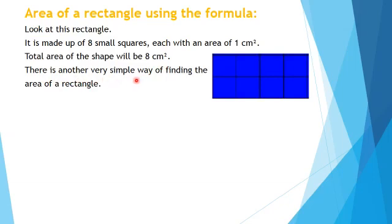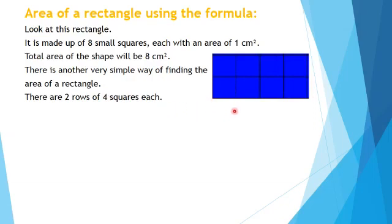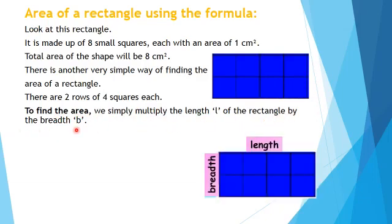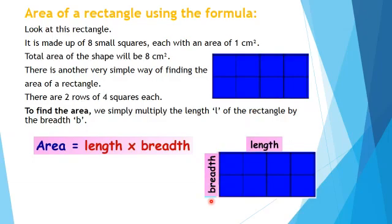There is another very simple way of finding the area of a rectangle. It has 2 rows of 4 squares each. A rectangle is a shape that has some length and a breadth. To find out the area, we simply multiply the length L of the rectangle by the breadth B. Therefore, the formula for the area of a rectangle will be length multiplied by breadth.